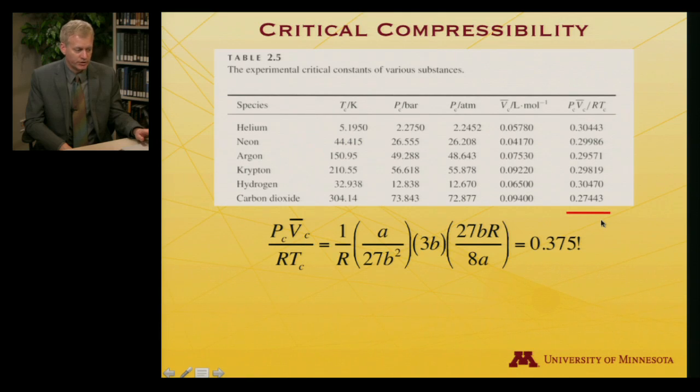It says that for every gas, at least within the van der Waals equation of state approximation, the critical compressibility is a constant: 0.375. In fact, if we refer back to this column, it's not 0.375, but it's not that far.